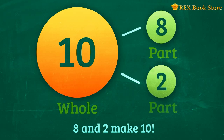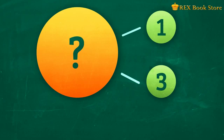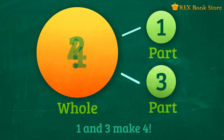This time, we're missing the whole number. What do you think it is? Correct! 1 and 3 make 4.